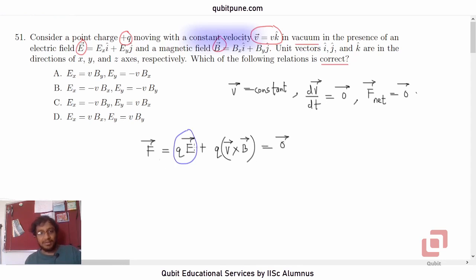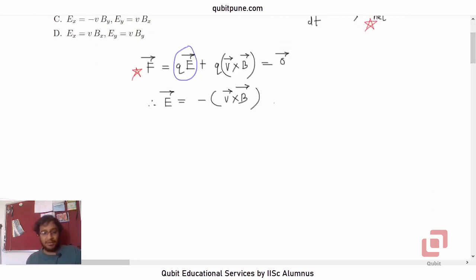Now we know that this net force is zero, the null vector. It won't be zero because of charge Q—it is a positive charge. So we have got the important relation: Ē = -(v̄ × B̄). Q cancels, so Ē + v̄ × B̄ = 0, which implies Ē must be negative of v̄ × B̄. Now let us use the determinant form of the cross product to get v̄ × B̄.